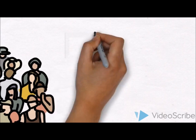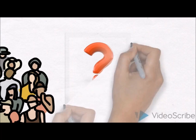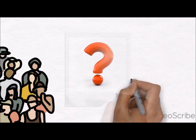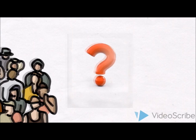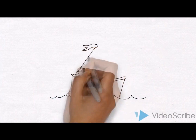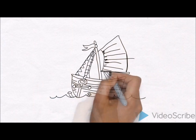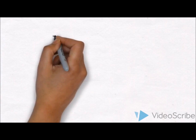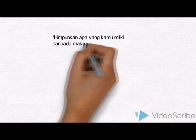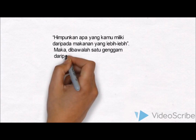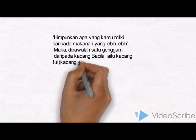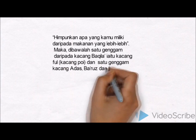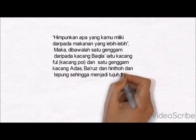Berdasarkan kajian ringkas tentang asal-usul bubur asyura dalam masyarakat Melayu, sumber utama yang menjadi faktor kewujudan jamuan bubur asyura ialah Kisah Bahtera Nabi Nuh AS. Banyak laman web, blog dan buku menyebut kisah ini — bahawa ketika Bahtera Nabi Nuh AS berlabuh di Bukit Judi pada Hari Asyura, beliau berkata kepada umatnya agar mengeluarkan apa yang mereka miliki daripada makanan yang lebih. Maka dibawalah satu genggam kacang bakilak, kacang adas, bakrus, hintoh dan tepung sehingga menjadi tujuh bagai biji-bijian yang dimasak.